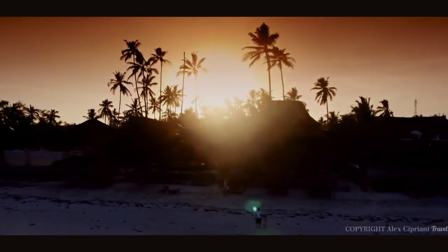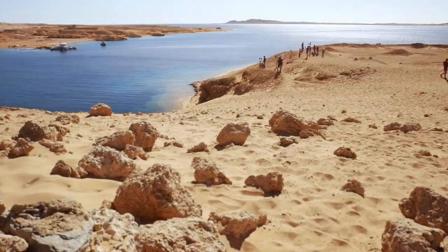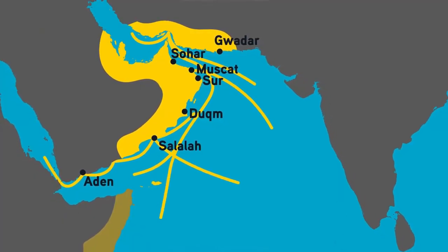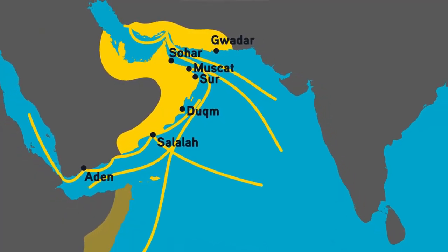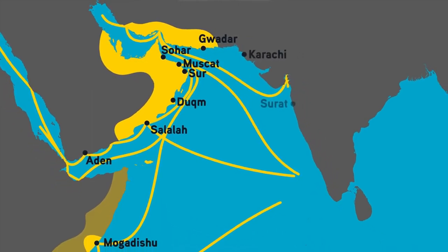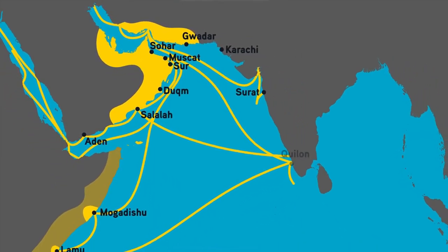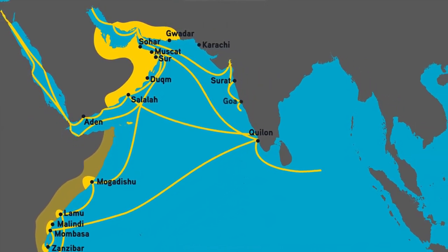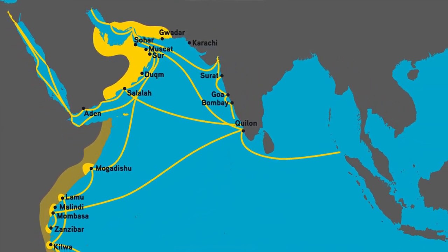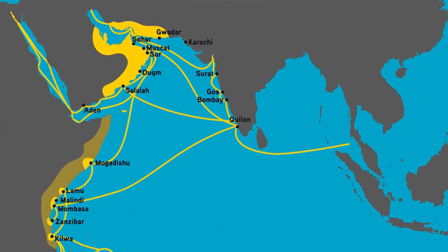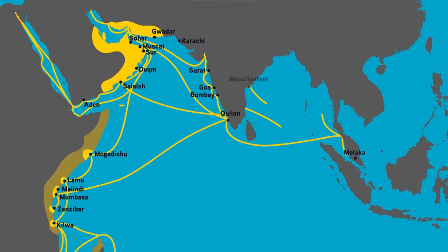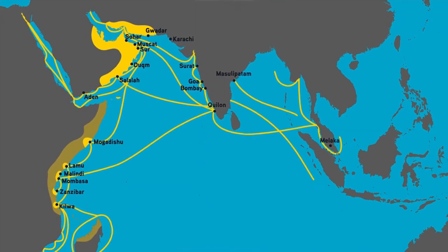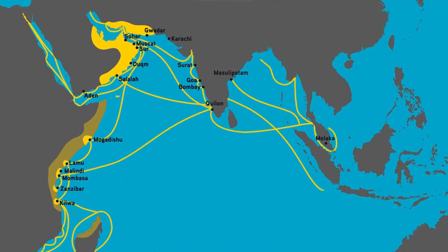From the shores of Zanzibar to the banks of the Nile, the Arab slave trade spread its wicked web, shattering lives with malevolent glee. The trafficking of African slaves began 1,400 years ago, with millions shipped across the Indian Ocean and the Mediterranean. Today we learn about the less explored Arab slave trade.